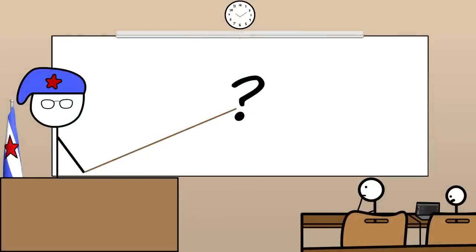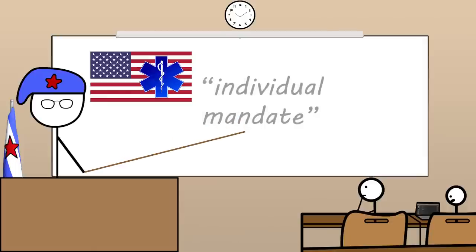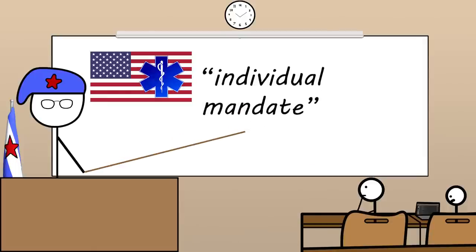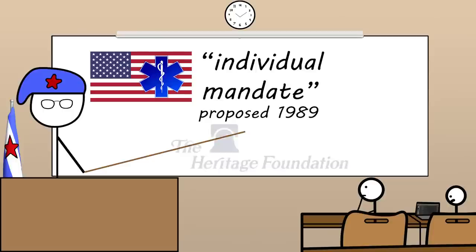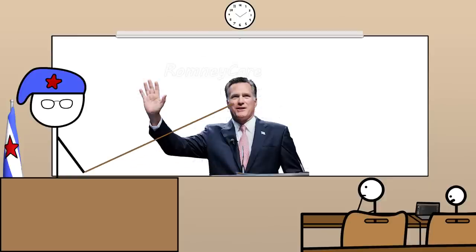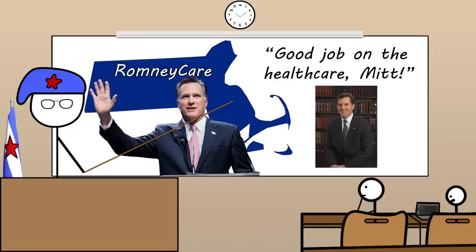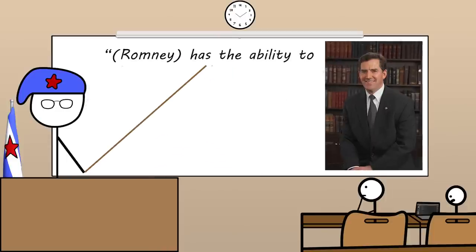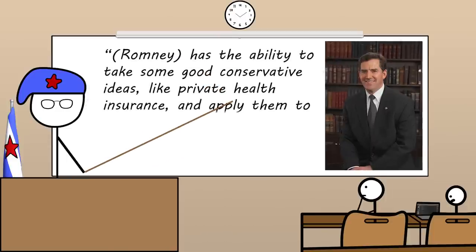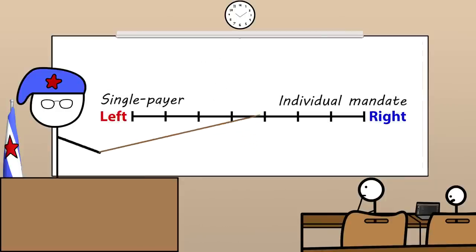Let's use a concrete example: the American healthcare system. The concept of an individual mandate — that everyone be required to have health insurance by law — was first proposed in 1989 by conservative think tank the Heritage Foundation as an alternative to single-payer healthcare. Republican Governor Mitt Romney implemented the individual mandate in Massachusetts and was lauded by his fellow conservatives for doing so. Jim DeMint, a Tea Party Republican state senator from South Carolina, praised Mitt Romney during his 2008 presidential campaign, saying he had the ability to take some good conservative ideas like private health insurance and apply them to the need to have everyone insured. So the individual mandate was at the time considered a right-wing conservative idea because the alternative it was going up against was a single-payer system.